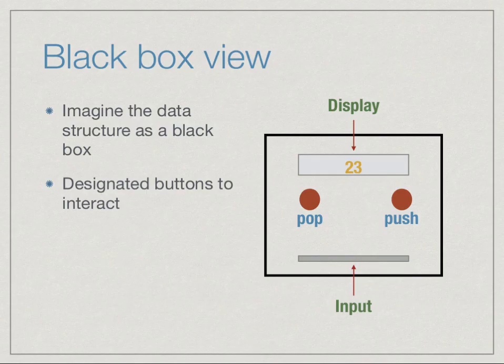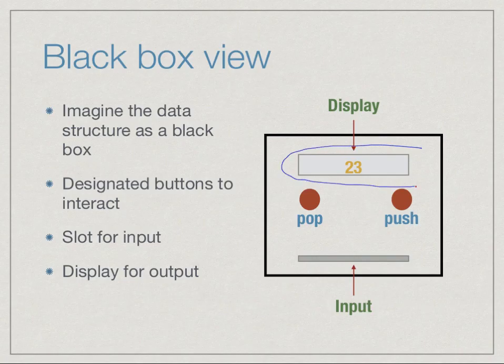We are allowed to remove the top element from the stack and put an element into the stack. This requires us to also add and view things from the stack. We have a slot for input and a way to receive information about the state of the stack. We can imagine we have some kind of a display. This is how we would like to think of a data structure. We don't want to know what's inside the black box. We just want to specify that if we do a sequence of button pushes and supply input through the input box, what do we expect to see in the display?